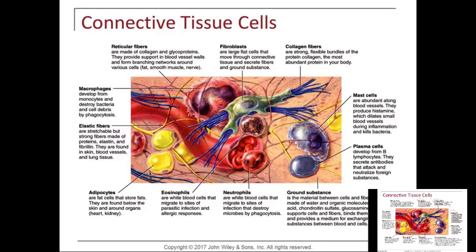That's why when you do a CBC — a complete blood count — if the eosinophil count is really high, maybe they're allergic to something. If the neutrophil count is really high, maybe there's a bacterial infection. If their B cells are really high, maybe there's an infection going on. Macrophages, which develop from monocytes, will also destroy bacteria and cell debris through phagocytosis.